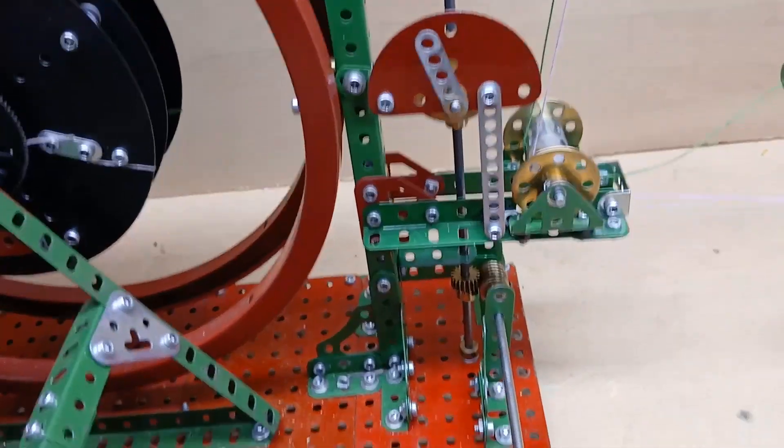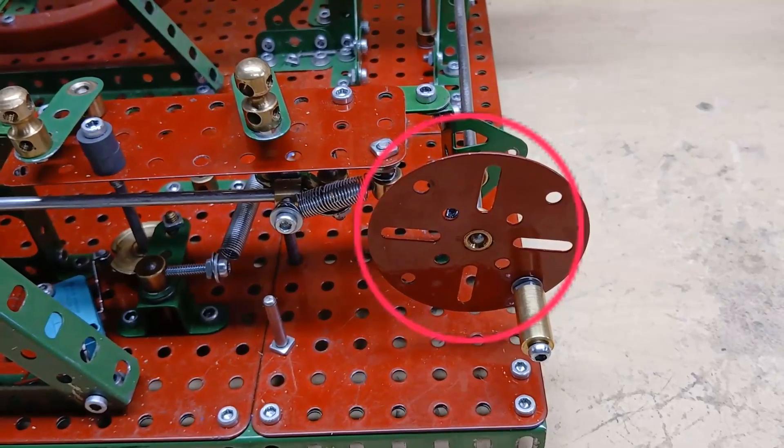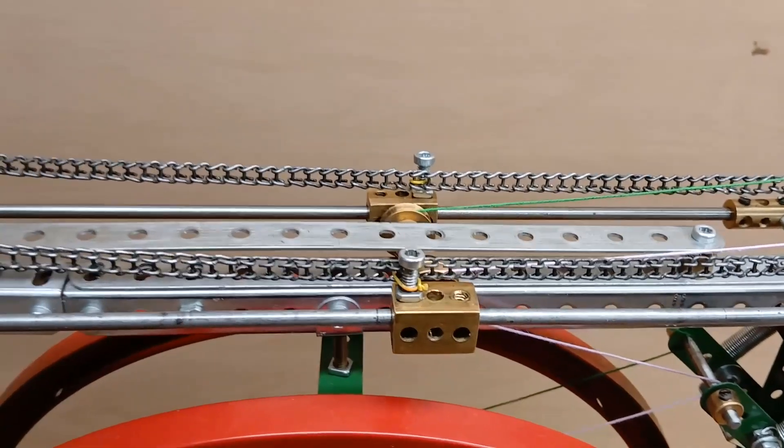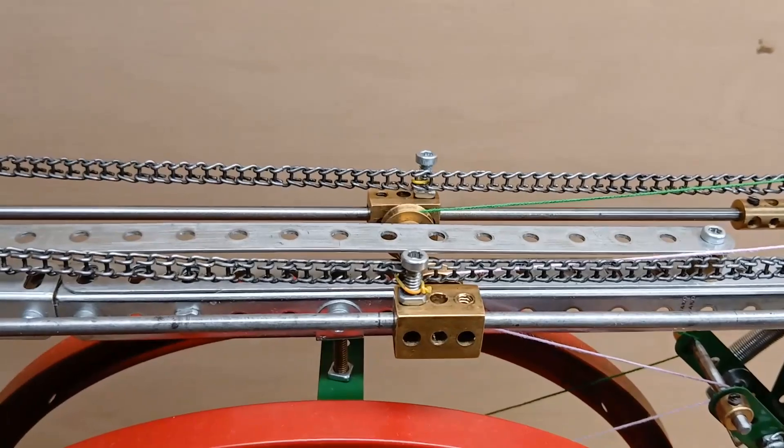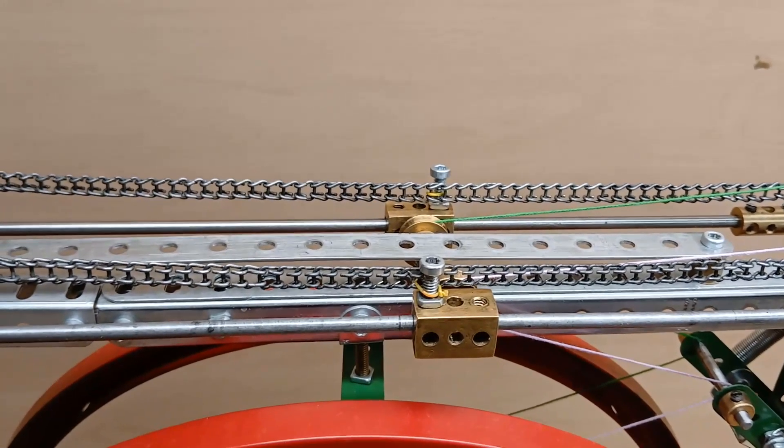Also there's a steering facility, which in my model is operated by this handle. What it does is move these two pulleys back and forth, and in doing so it effectively changes the speed at which the two cables are being pulled in.